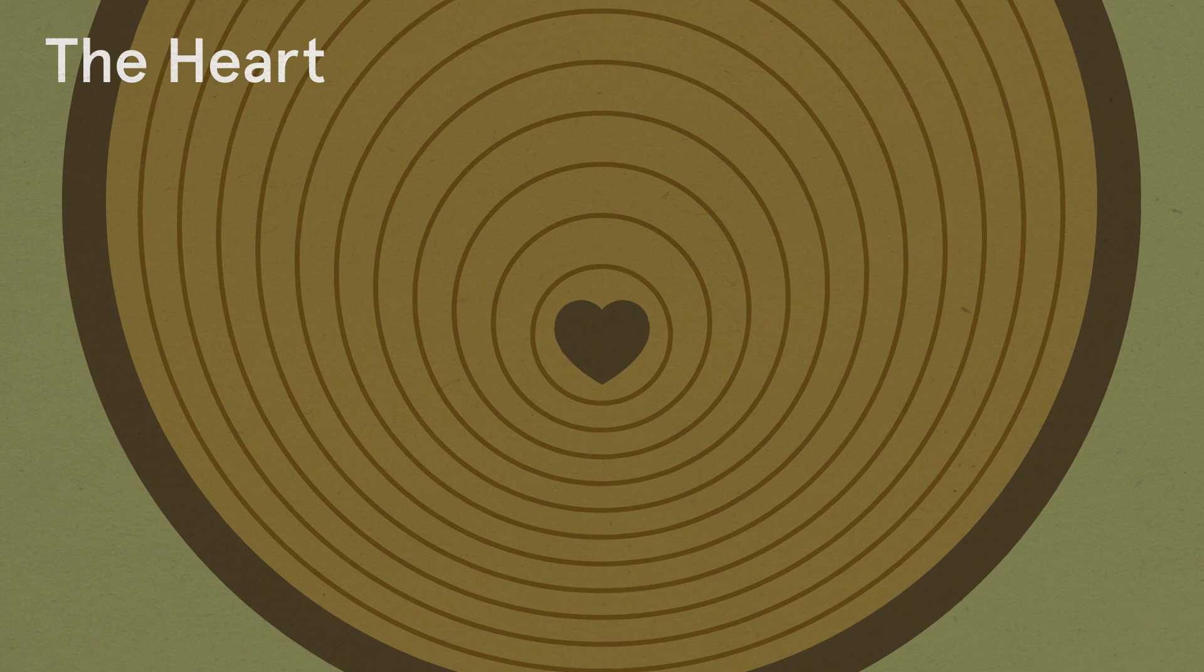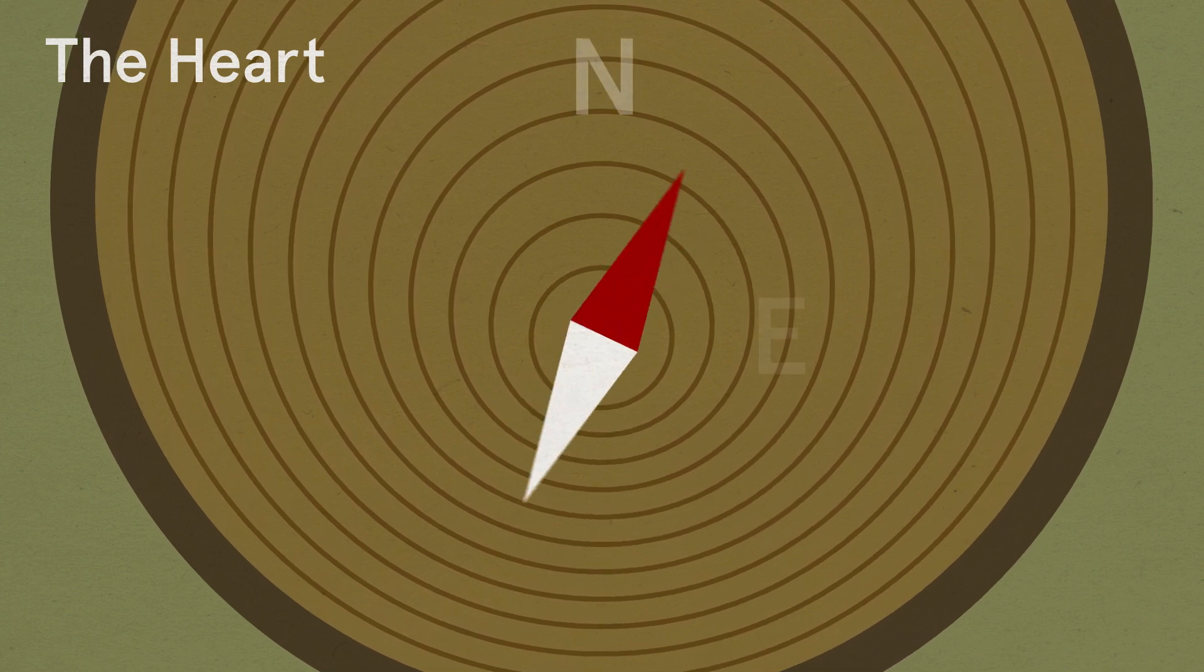This is the point where the rings are smallest and it will tend to be nearer the southern edge of the stump.